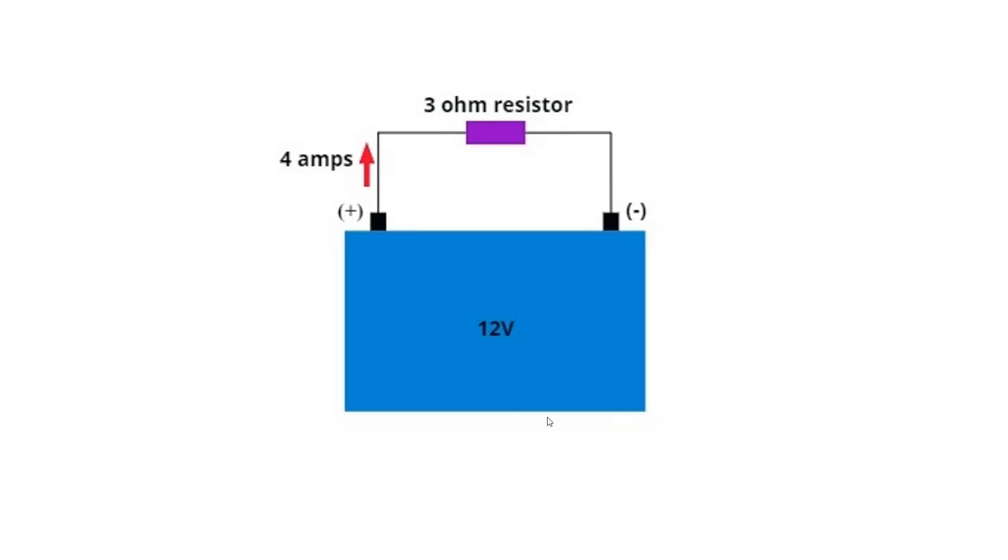Ohms are a measure of resistance and we have 4 amps. Now, have a look, there's some mathematical relationship, isn't there? 12 volts divided by 4 amps means there must be 3 ohms resistance in the circuit. Or, 12 volts divided by 3 ohms means 4 amps must be flowing. Or, the final relationship, 4 amps times 3 ohms means there must be 12 volts to push the electricity along.